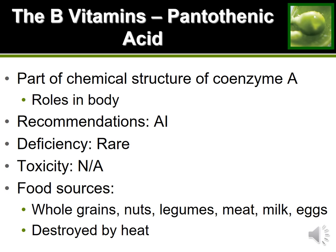The next B vitamin is pantothenic acid, which makes coenzyme A — already familiar from metabolism. Pyruvate loses a carbon, and the remaining two carbons attach to coenzyme A, creating the acetyl-CoA structure. So pantothenic acid makes coenzyme A, which helps us make acetyl-CoA. Because pantothenic acid is widespread in many foods, deficiencies are quite rare.